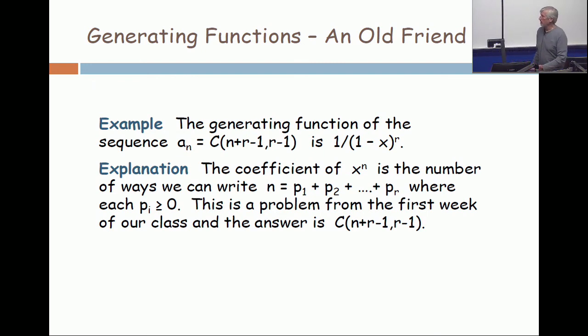And so we can now just restate that formula that we learned in the first week in terms of generating functions. The generating function 1/(1-x)^r expresses the sequence a_n as the binomial coefficient C(n+r-1, r-1).